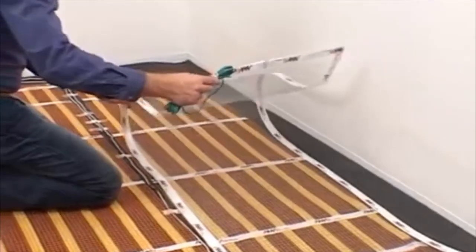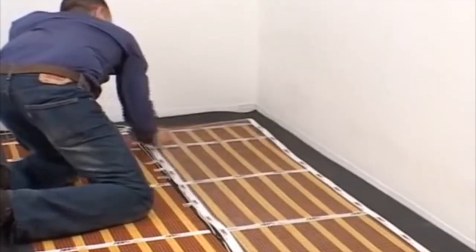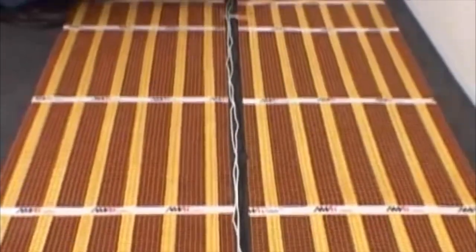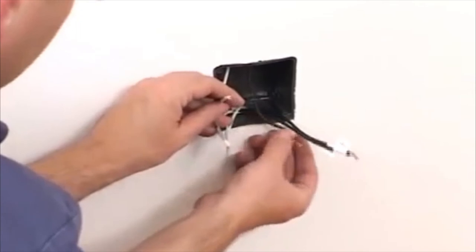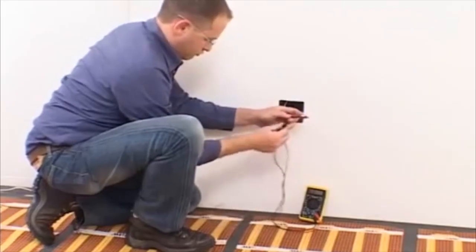If installing in wet areas, place a grounding mat on top of the heating mat. Refer to our installation manual for more detailed instructions. Using the conduits, bring the cold leads from the mats to the connection box and the floor temperature safety sensor leads to the thermostat box.